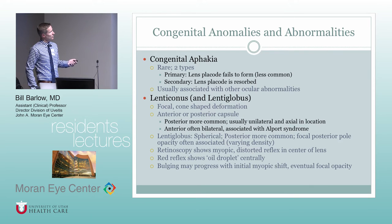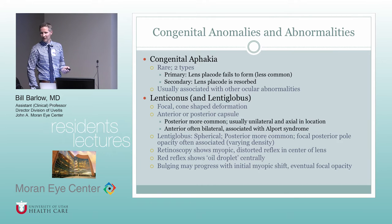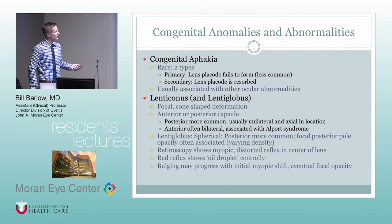Congenital anomalies: congenital aphakia is very rare — either the lens plaque fails to form or is resorbed — and you'll usually see other ocular abnormalities. Lenticonus is a focal cone-shaped deformation, anteriorly or posteriorly, but posterior is more common and usually unilateral and axial, whereas anterior is often bilateral and associated with Alport syndrome — a not uncommon exam question. On retinoscopy you see a distorted reflex centrally; the red reflex may show an oil droplet appearance. The bulging may progress with an initial myopic shift and eventually a focal opacity.